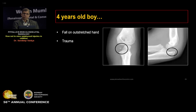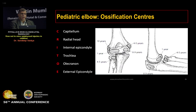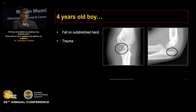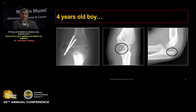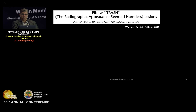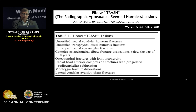Another example: a four-year-old boy with fall on outstretched hand shows an ossification flake within the ulnohumeral joint. This might be thought of as the trochlear ossification center, but the trochlea ossifies only around age eight to nine years. In a four-year-old, this cannot be the trochlea; advanced imaging reveals an entire medial condyle fragment requiring open reduction and internal fixation. The elbow is especially notorious for fracture misdiagnosis. A group of such injuries is termed TRASH lesions — an acronym for The Radiographic Appearance Seemed Harmless — which cannot be diagnosed on X-rays as they pass through cartilage.